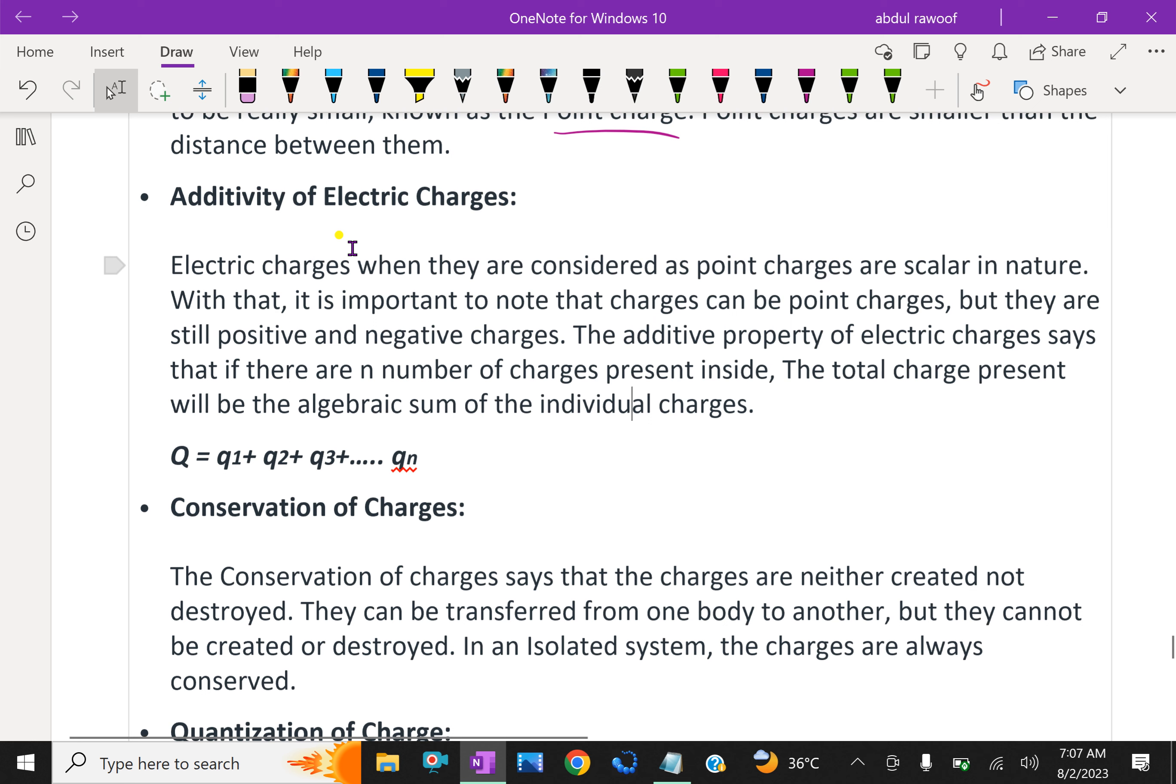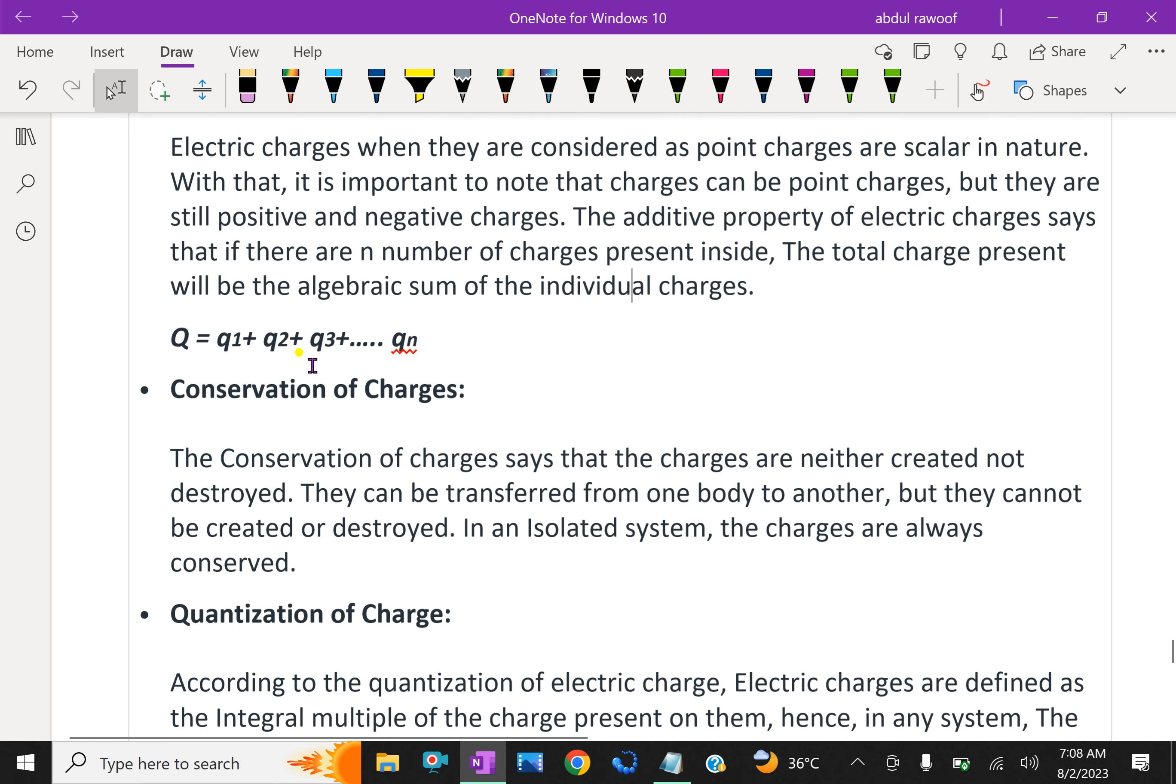Additivity of electric charges. Electric charges when they are considered as point charges are scalar in nature. With that, it is important to note that the charges can be point charges but they are still positive and negative charges. The additive properties of electric charges says that if there are n number of charges present, the total charge present will be the algebraic sum of the individual charges. That is Q = Q1 + Q2 + Q3 + Q4 + ... up to n charges. It may be positive or negative; the algebraic sum is the total charge on that material.